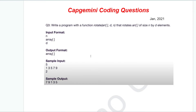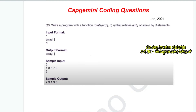The question is: write a program with a function rotate(array, d, n) that rotates an array of size n by d elements. The input format is: n is the size of the array, followed by the elements of the array, then d is the number of times you have to rotate the array. The output format is a single rotated array.